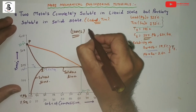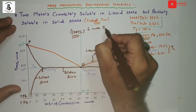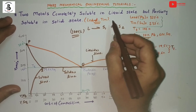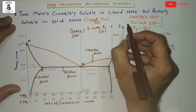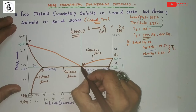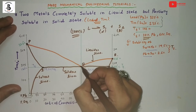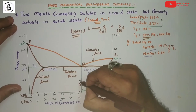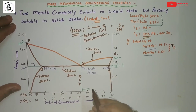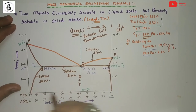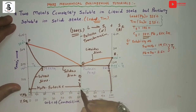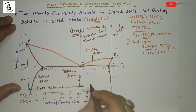At eutectic conditions, all the liquid transforms into two solids: S1 and S2, where S1 is related to lead forming the alpha phase and S2 is related to tin forming the beta solid phase. Just above the eutectic point is 100% liquid, and just below the eutectic line it always gives alpha plus beta — this transformation is known as eutectic transformation. Any point before eutectic is hypoeutectic and any point after is hypereutectic.